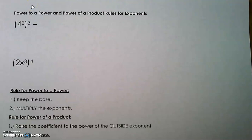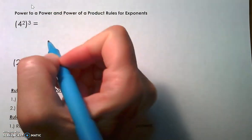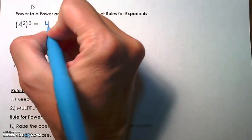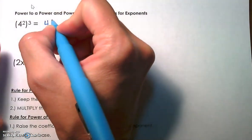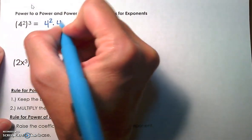In this video I will be teaching you the power to a power rule for exponents and the power of a product rule for exponents. So let's look at the first example. 4 squared is being used as a factor 3 times. I'm going to write this in expanded form just to show you how the rule works.